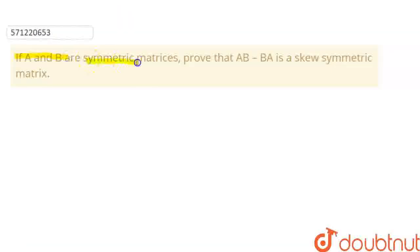If A and B are symmetric matrices, prove that AB minus BA is a skew symmetric matrix.